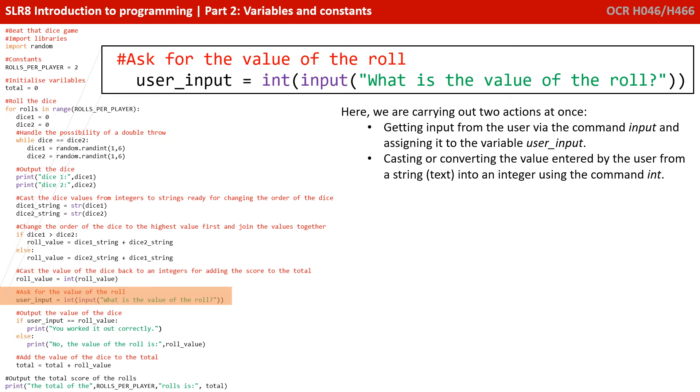That's because even if the user presses the key six on the keyboard, that's the ASCII character six. If we want it stored internally as a number, we have to cast it or convert it into an integer. And we do that with the int command. So there's two things happening at once in that line of code.